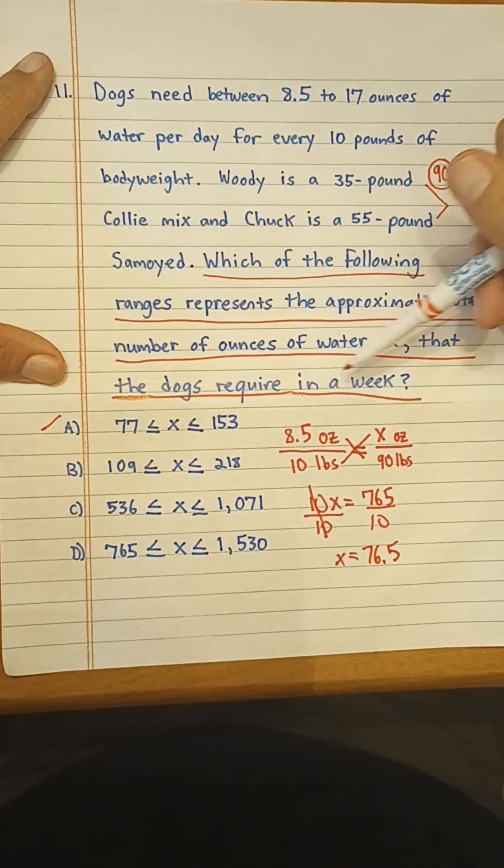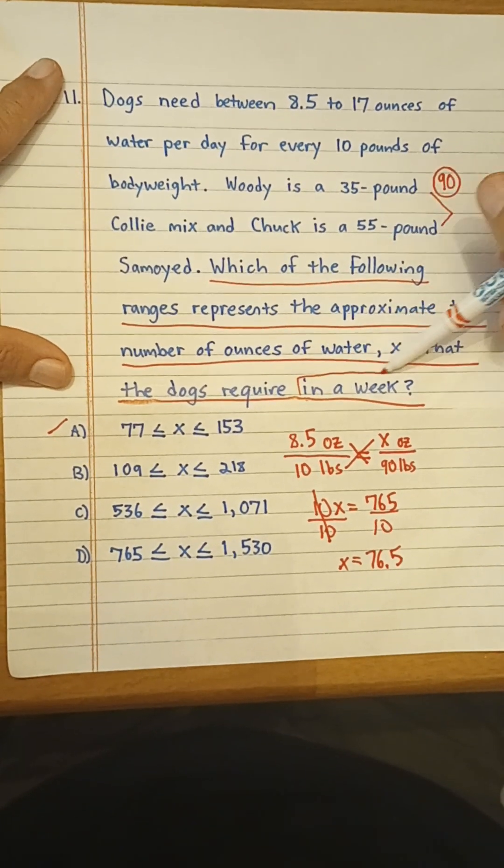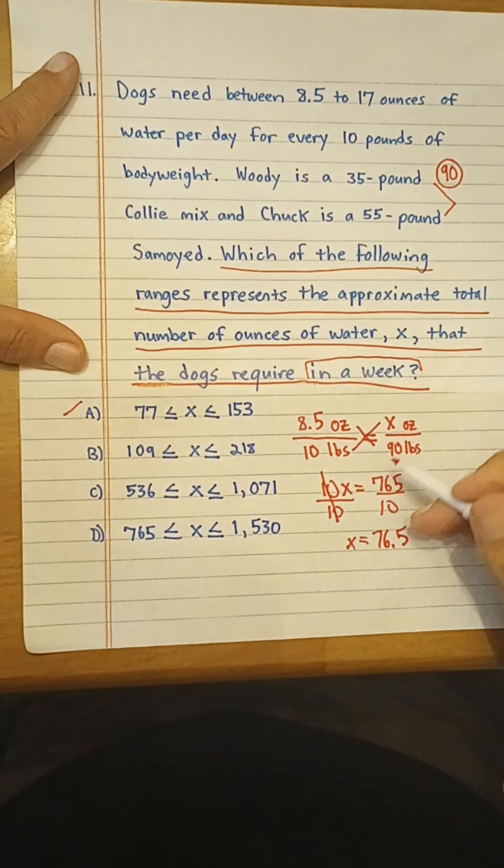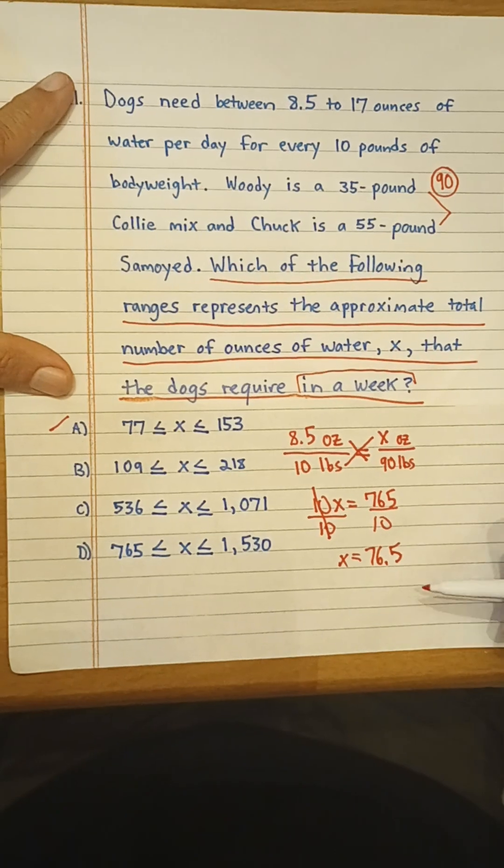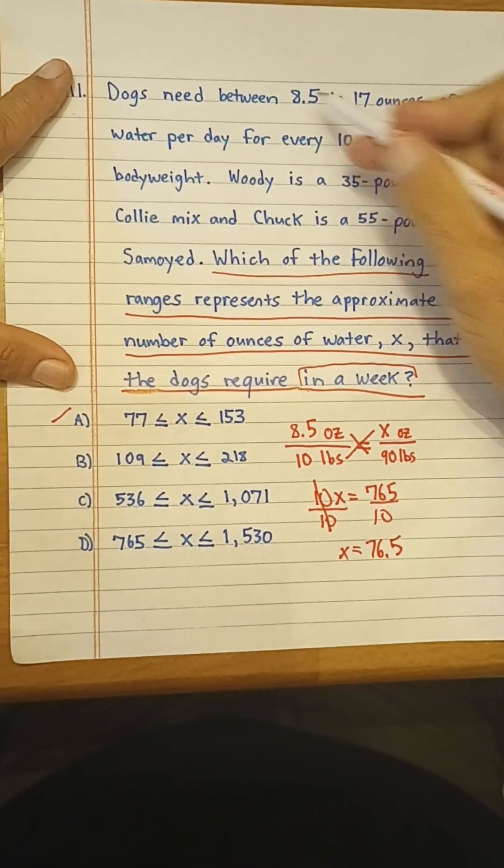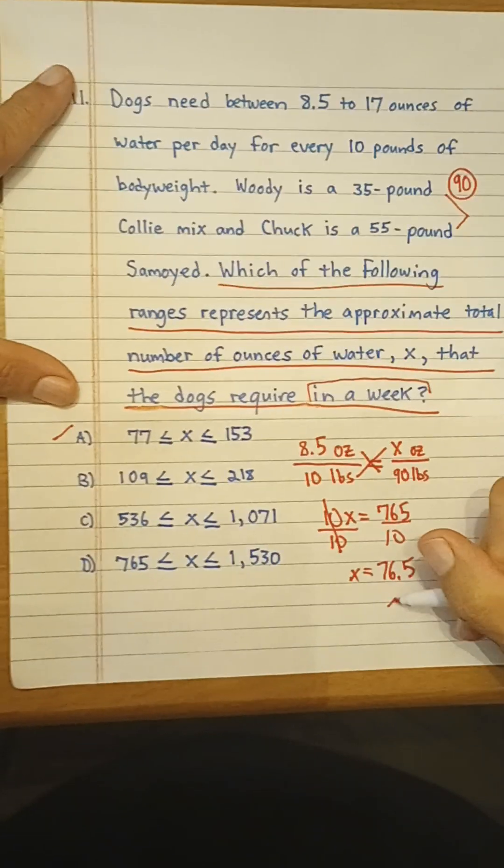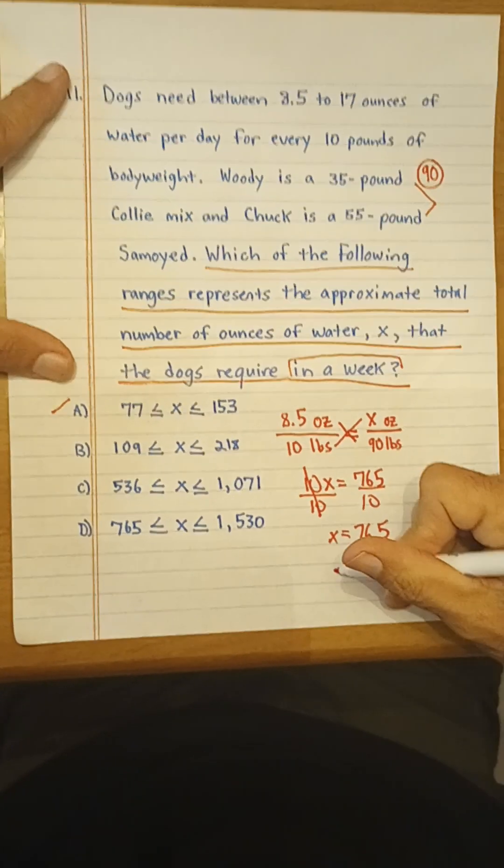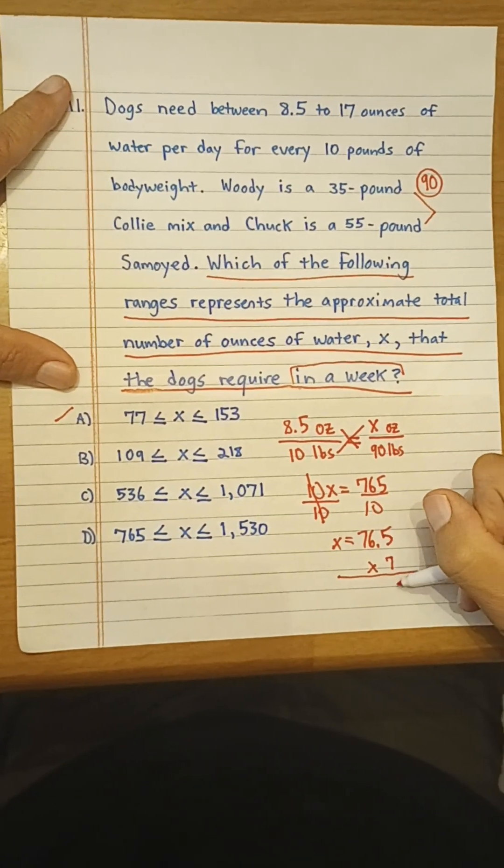Notice here that they say require in a week, right? So now to get the weekly intake, along the lower end of the range, we need to actually multiply that by 7. So let's see what we get when we do that.